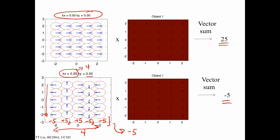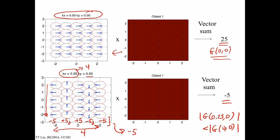The amplitude has gone from 25 down to 5. That makes sense because this is a uniform object — all 1's — and it is not as good a match for a pattern with spatial variation as it was for the pattern with no spatial variation. This suggests that g(0, 0) has a higher amplitude than g(0.25, 0) for a uniform object. The kx, ky equals 0 location is often referred to as the center of k-space.